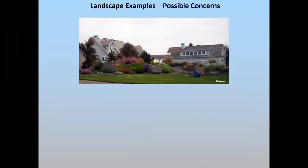I also saw a couple of examples online with potential concerns. Here's a sand mound — very attractive with multiple species of plantings and some rock, very aesthetically pleasing. However, one question I would have is what type of trees are these and how close are they to the mound? Would the roots actually enter the side or top of the mound and cause some damage to the piping? So that would be one consideration.